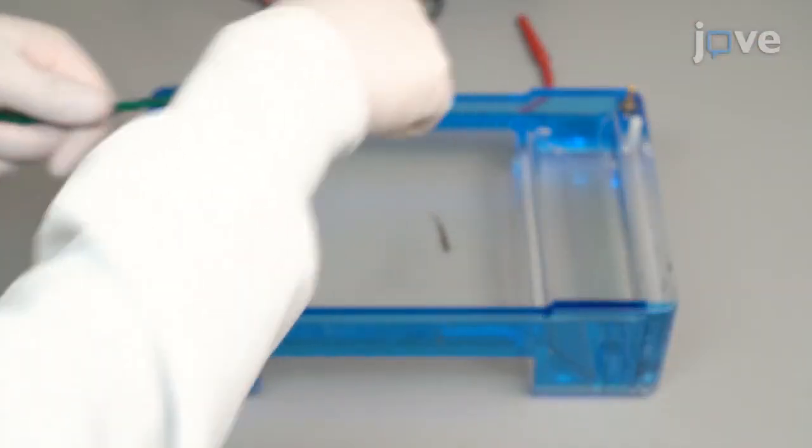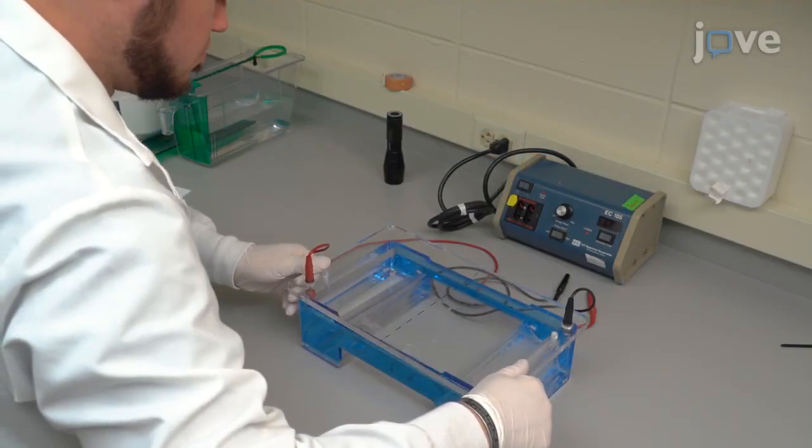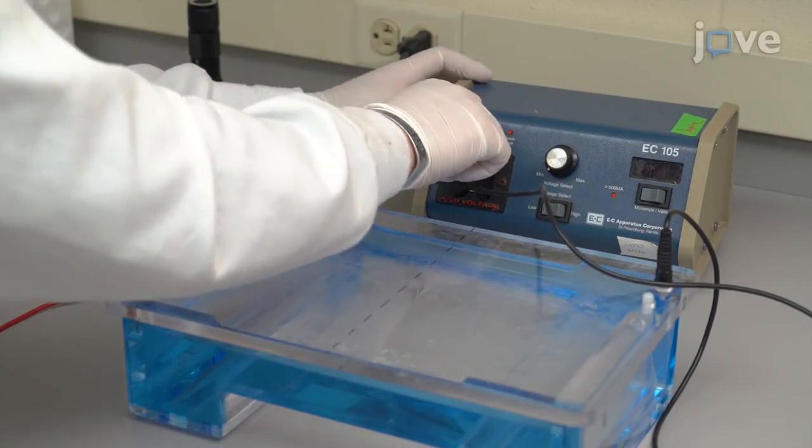Next, in the dark room, place one fish in the center of the Shuttlebox. Secure the lid and attach the electrodes to a power supply.